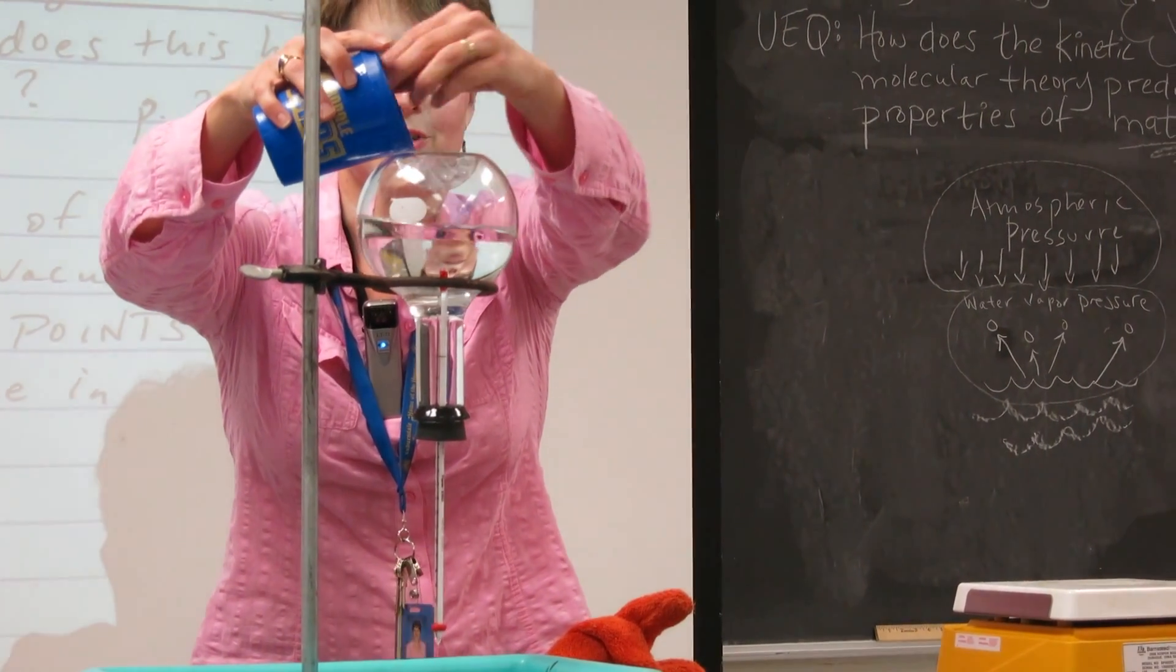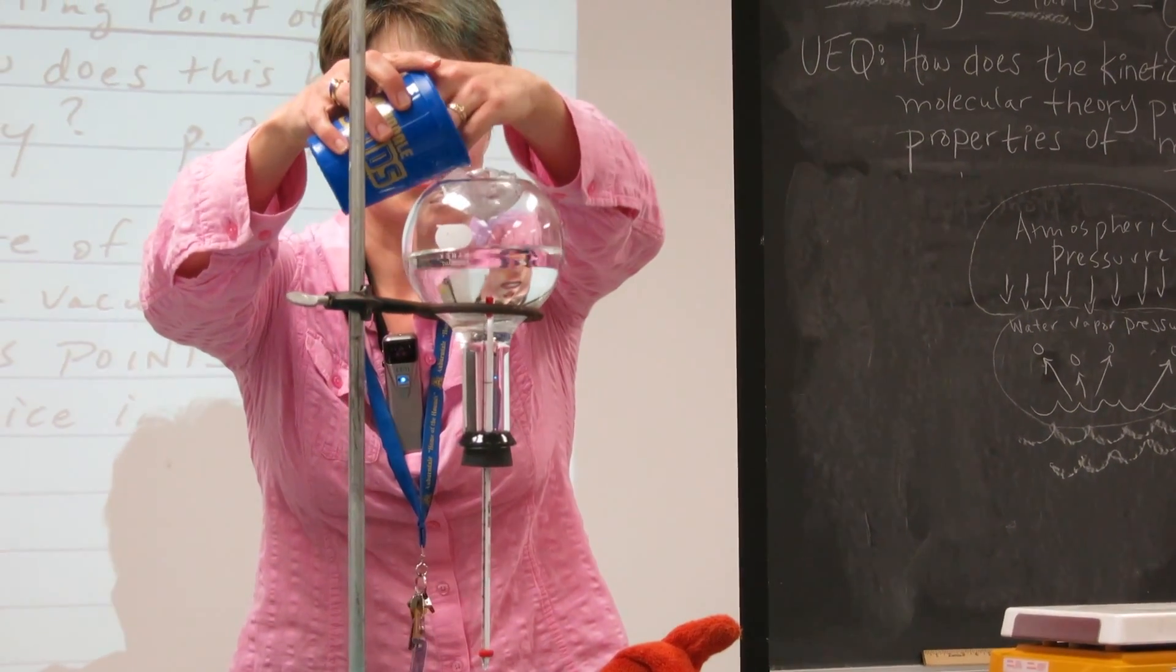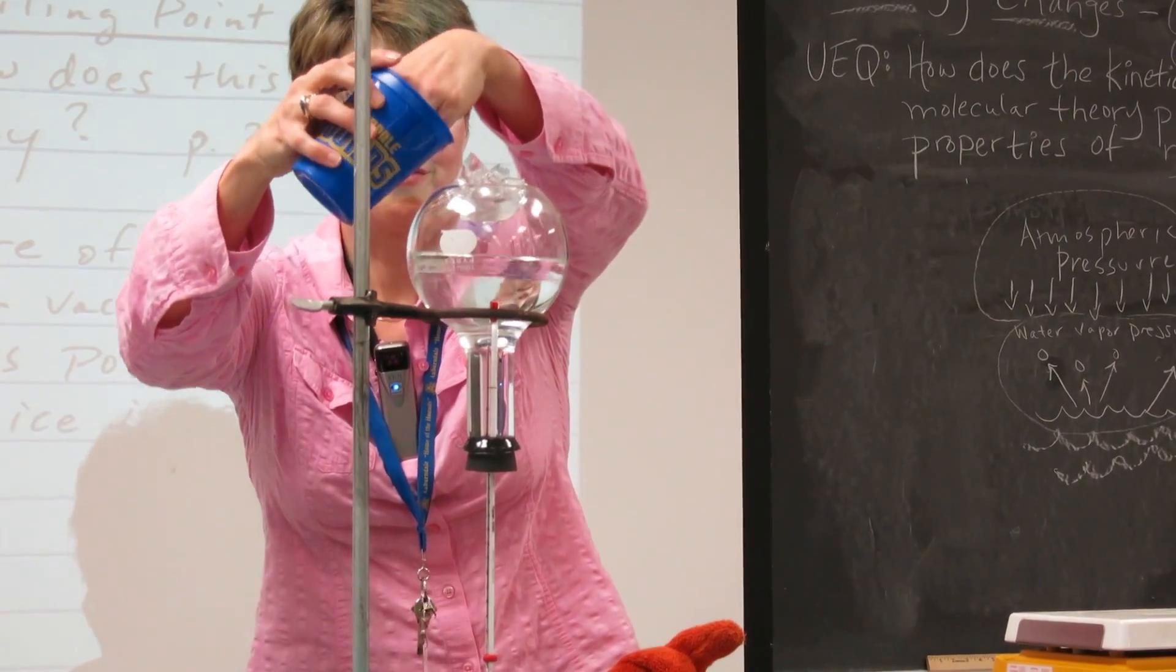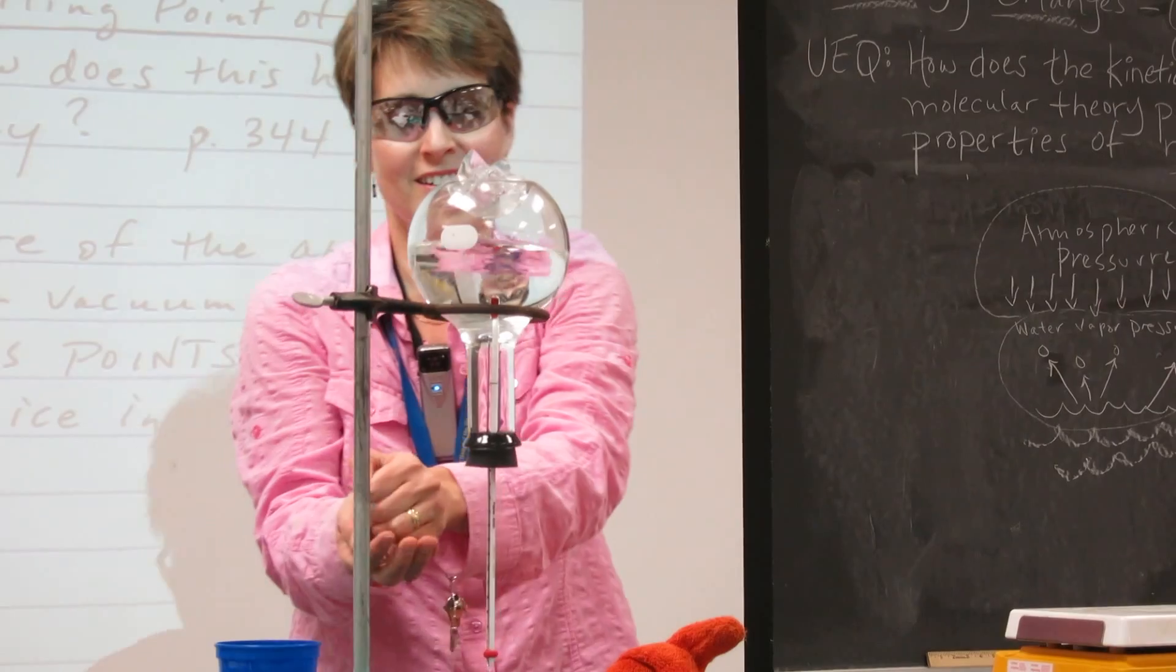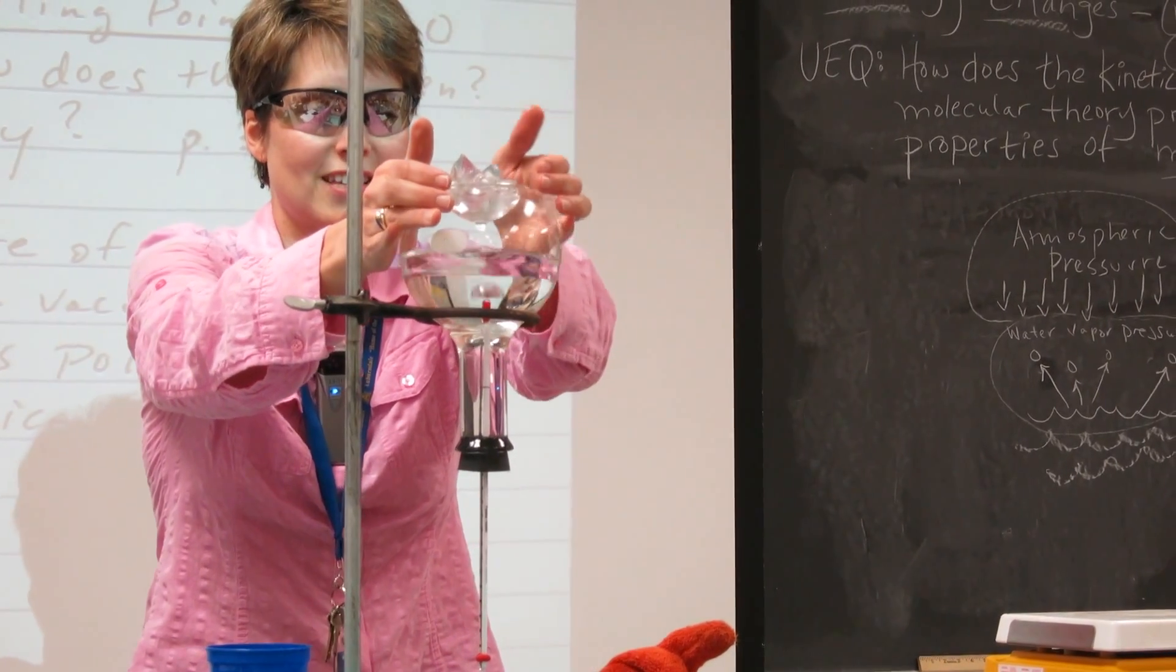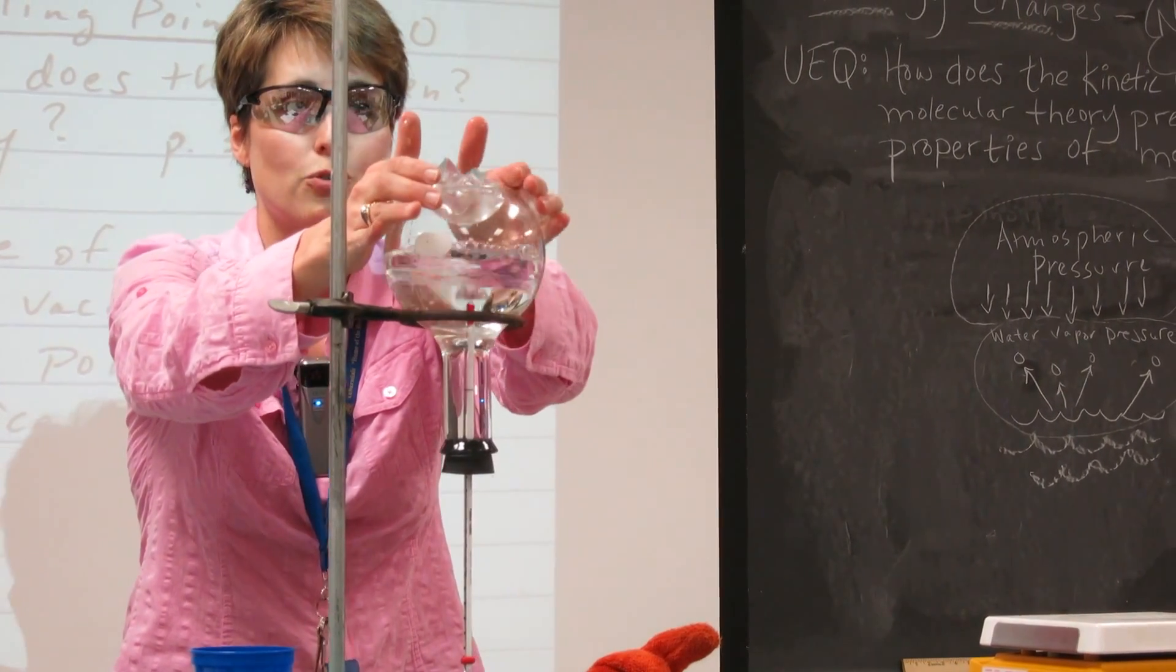Now the other thing that we're doing is we're putting ice directly on top of our flask, and we're cooling down the vapor that's over the water. And when we do that, it shrinks the gas above it, creates a lower pressure.